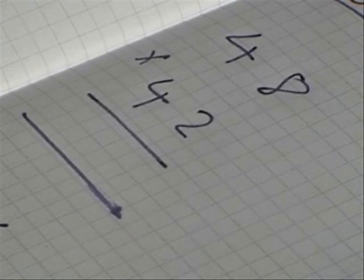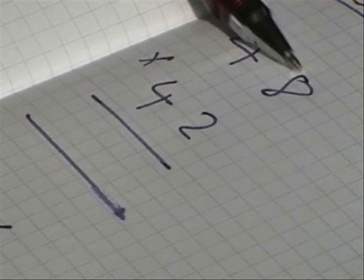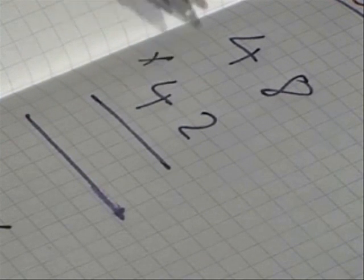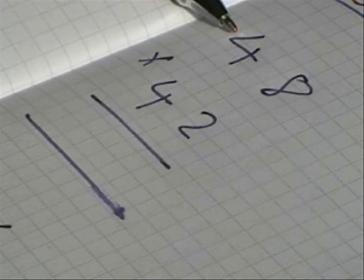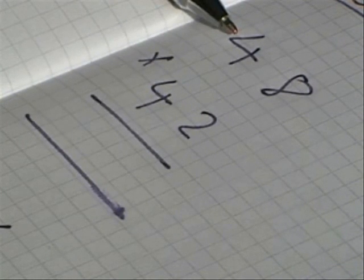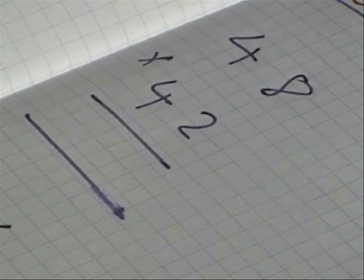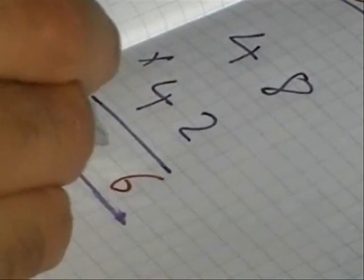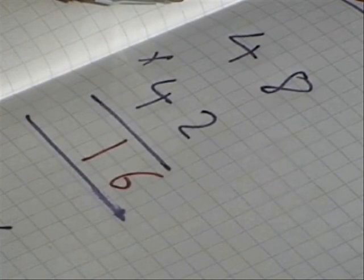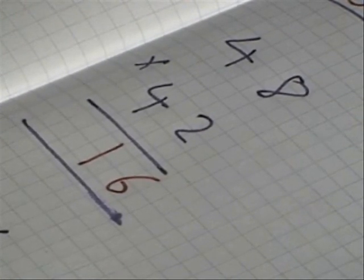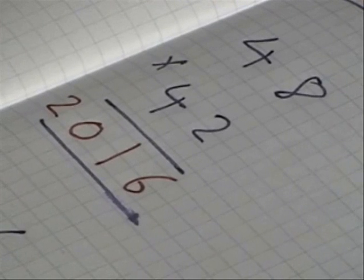Here we have 48 times 42. You'll notice that the 8 and the 2, when added together, do give you 10, and both the tens, in this case, which is 4 and 4, 40, it is the same. So using the principle that we used before, 8 times 2 is 16, so that's my 16. The next number after 4 is 5, so 4 times 5 is 20, and in this case, the answer is 2016.